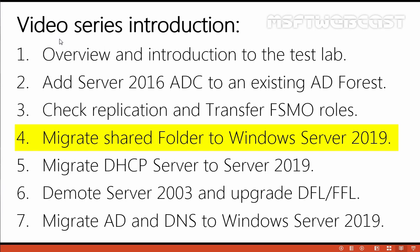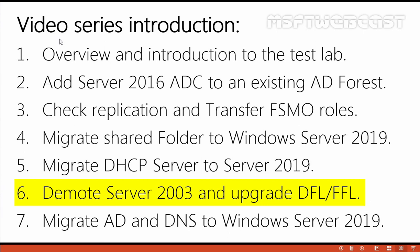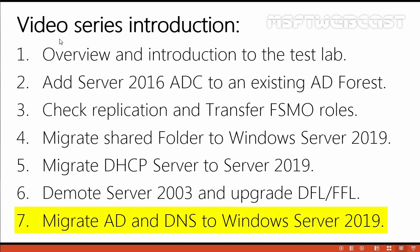In the fourth step, we will migrate shared folders from Windows Server 2003 file server to Windows Server 2019 file server. In the fifth step, we will migrate DHCP server from Windows Server 2003 to Windows Server 2019. In the sixth step, we will demote the Windows Server 2003 domain controller and upgrade the domain and forest functional levels so we can add Windows Server 2019 as a domain controller into our Windows Server 2016 Active Directory. In the last video, we will add Windows Server 2019 as an additional domain controller to our Windows Server 2016 forest, check replication between 2016 and 2019, and transfer FSMO roles from Windows Server 2016 to Windows Server 2019. After successfully completing all seven steps, we can migrate our Windows Server 2003 Active Directory forest to Windows Server 2019.